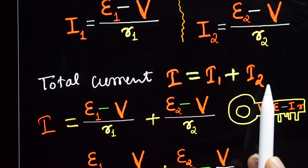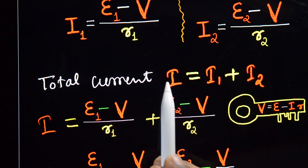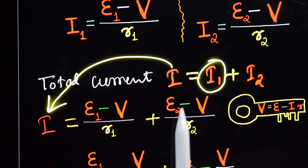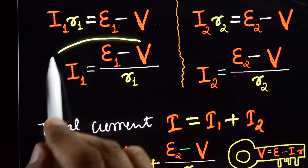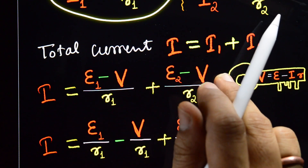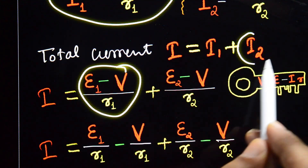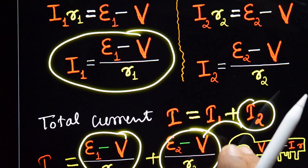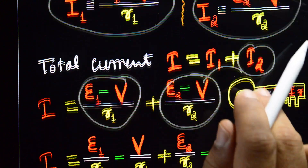Substituting, i = (e1 - v) / r1 + (e2 - v) / r2.